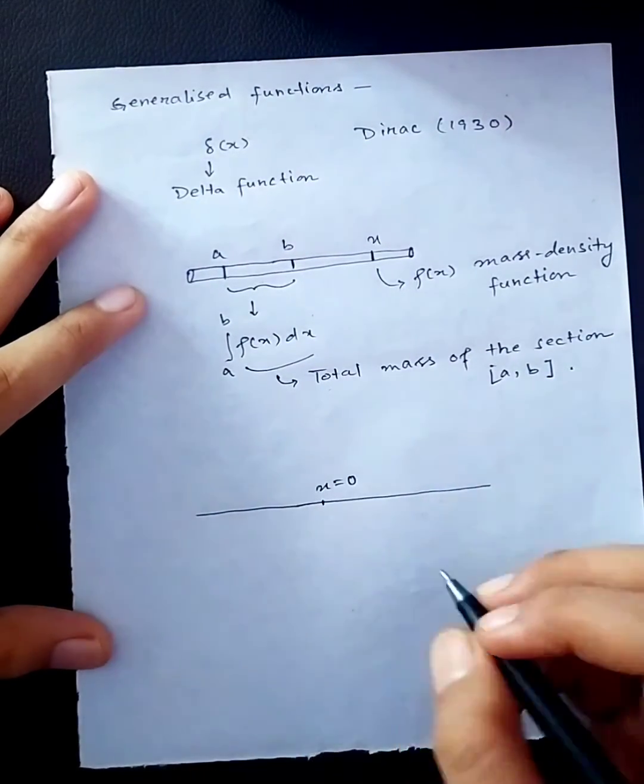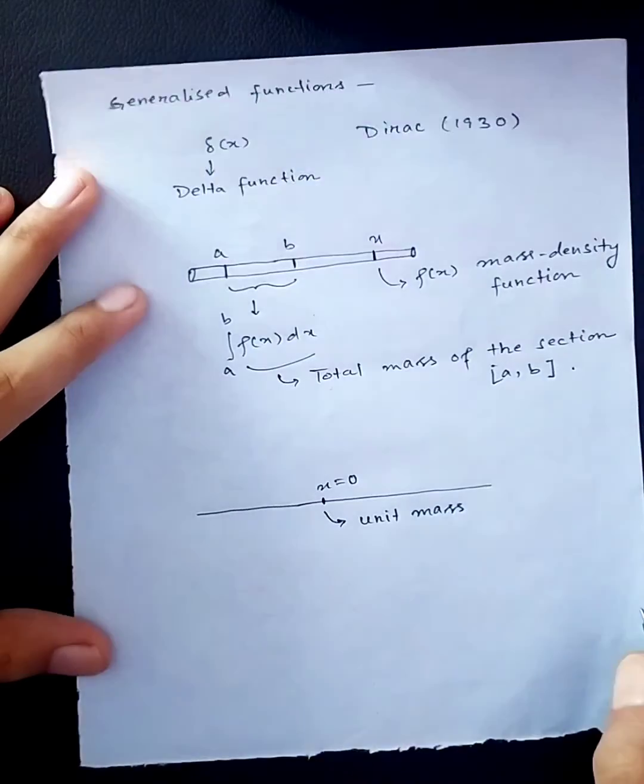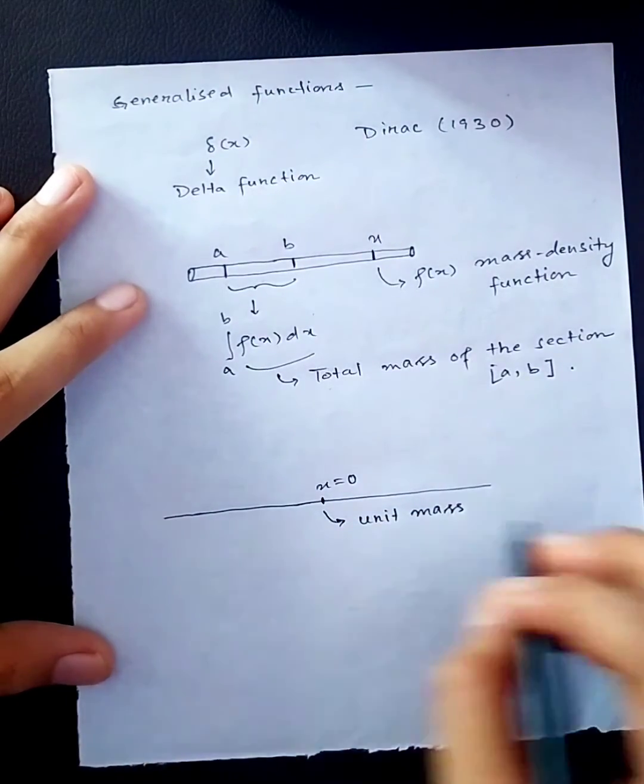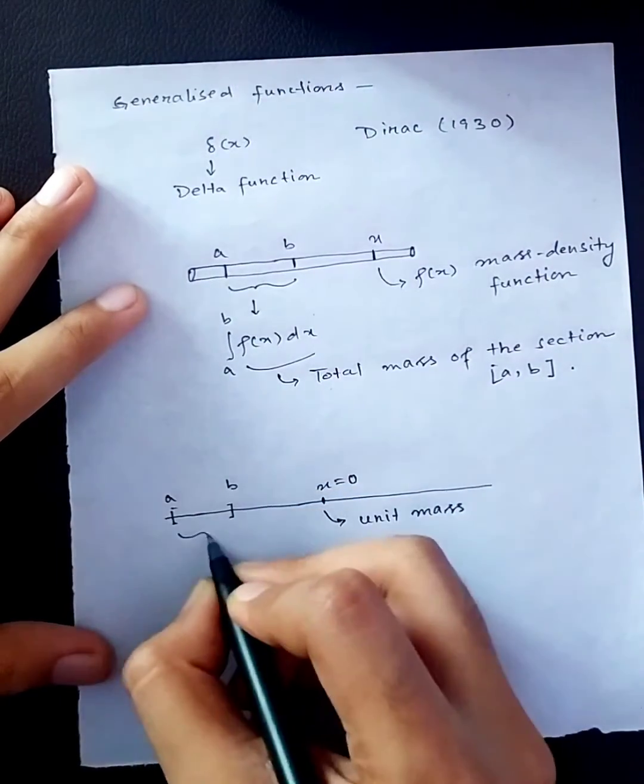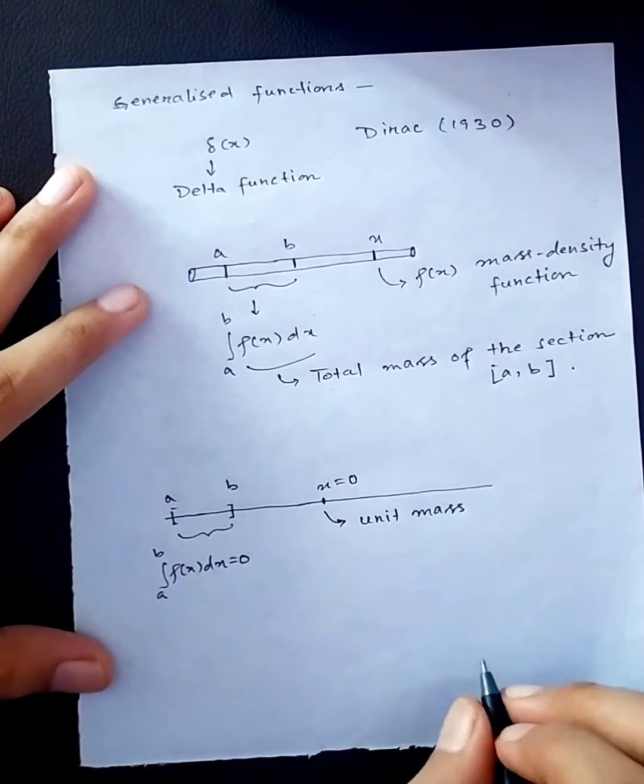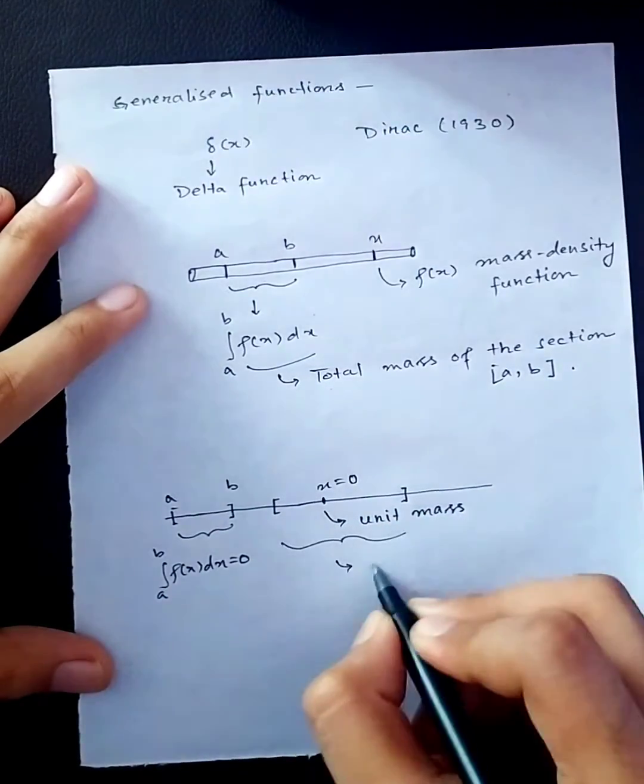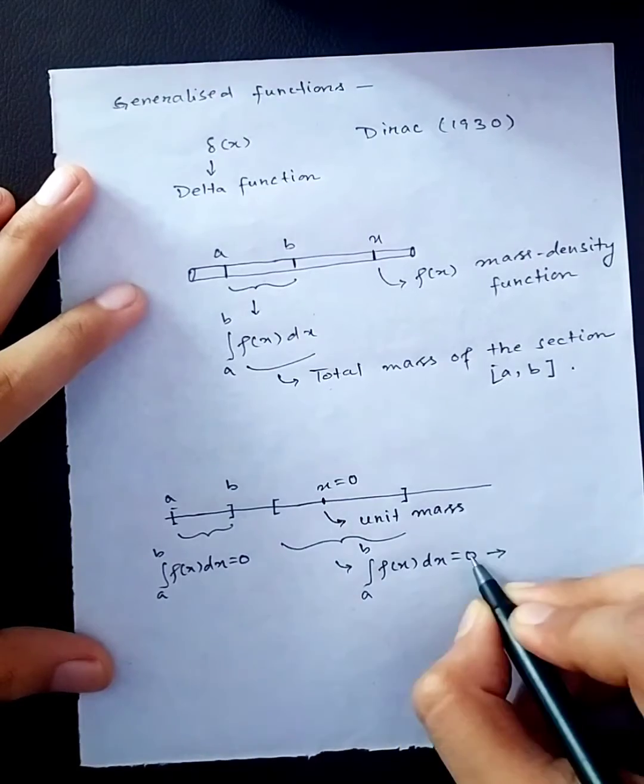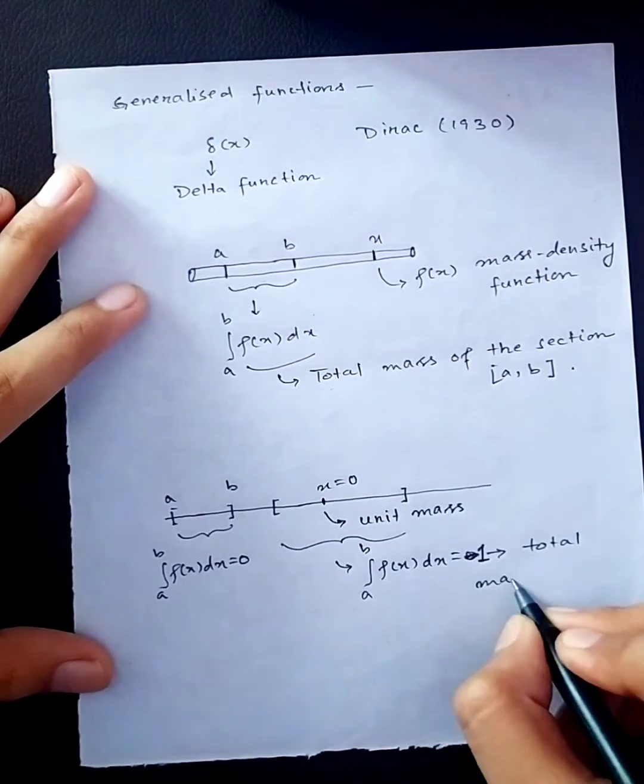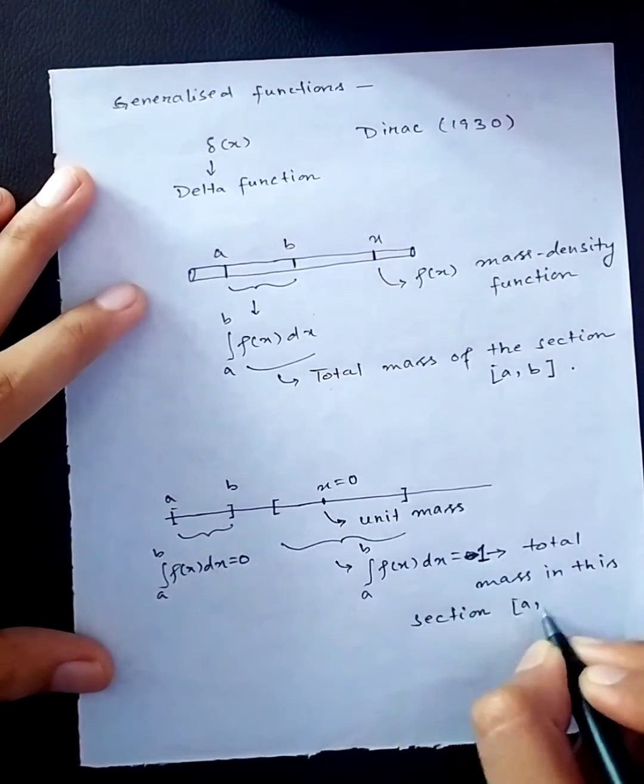Now if a unit mass is concentrated at the point, say x equals 0, and we consider negligible mass at all other parts of a slim wire, such that if we find out the mass of any section which doesn't contain the point 0, then it is 0. And for any section which includes the point 0 gives us a unit mass. This makes sense physically but mathematically it is problematic, since there is no such classical function which satisfies the above conditions.